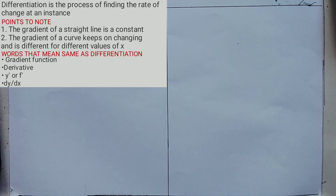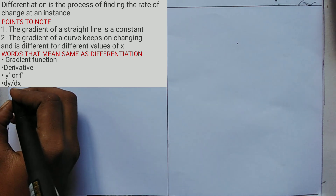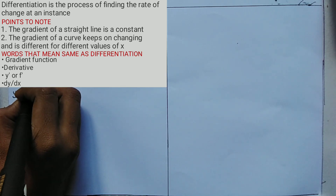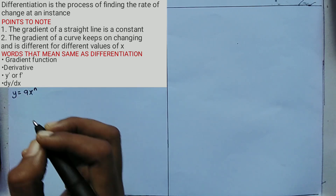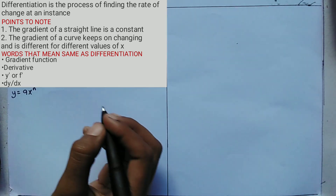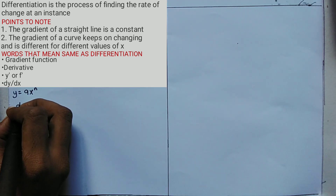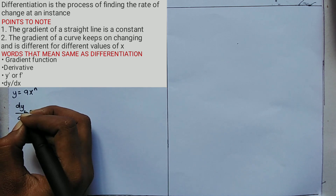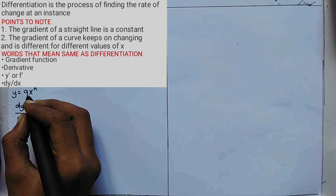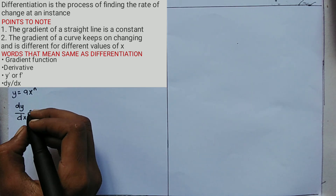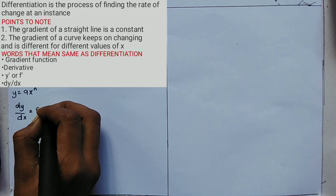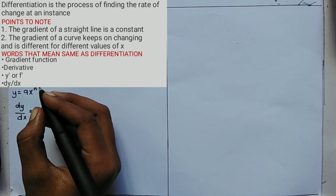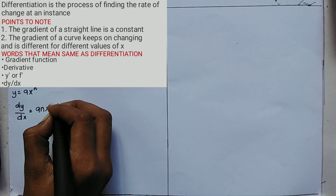Suppose you are given an equation y = ax^n. When you are told to differentiate, you say dy/dx is equal to: multiply the coefficient of x by the power of x, giving anx, then subtract 1 from the power of x, so you write n minus 1. That's how you differentiate.